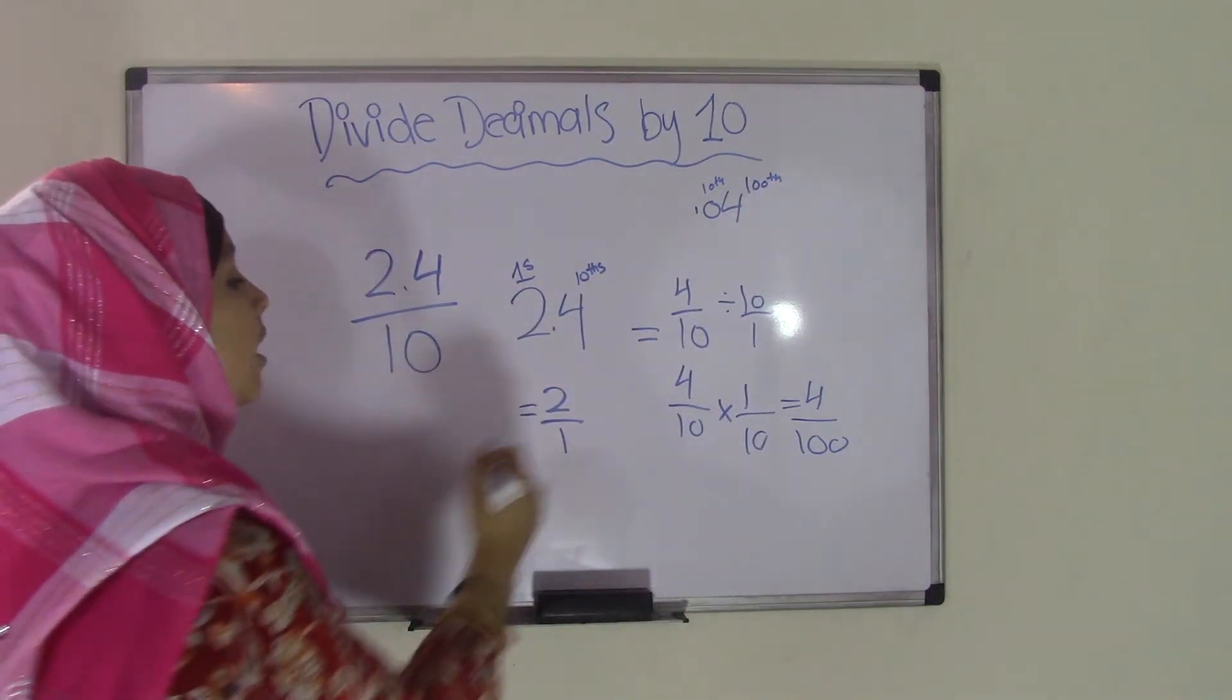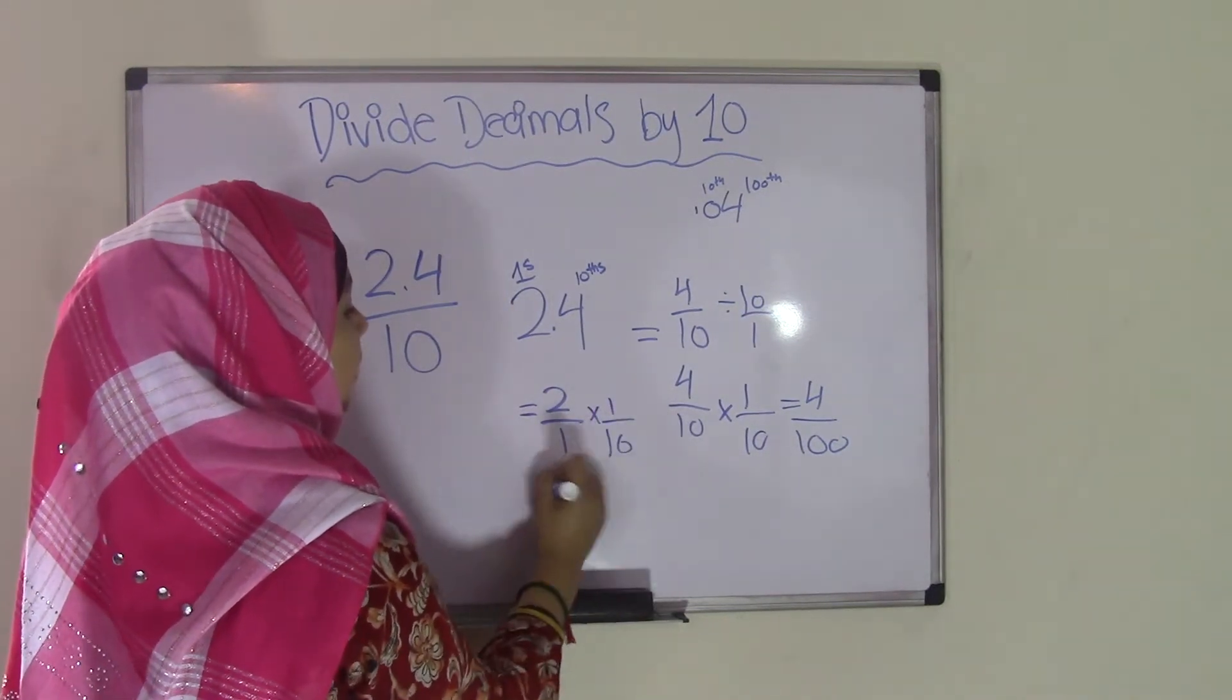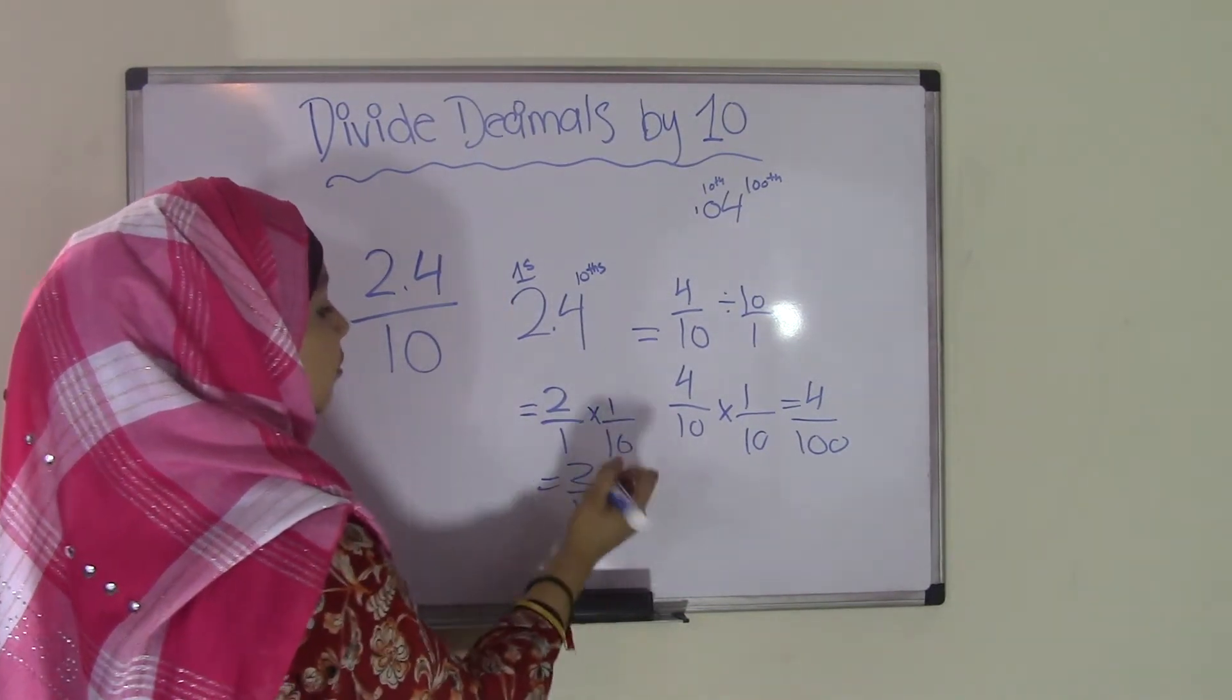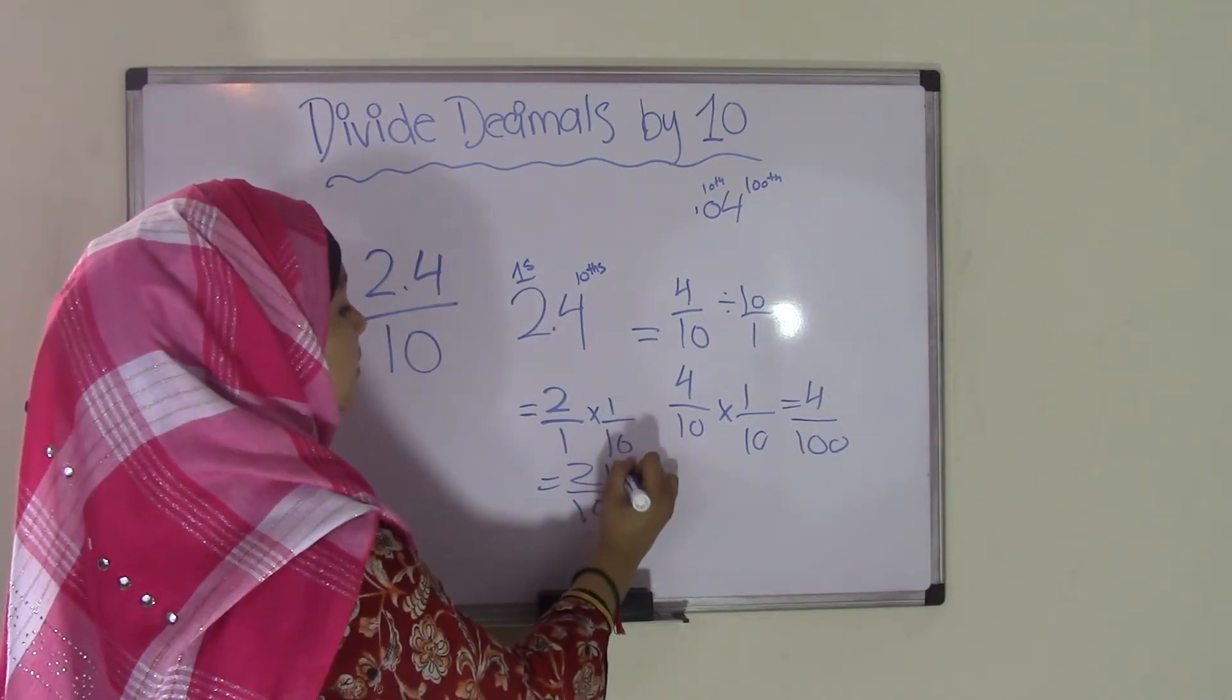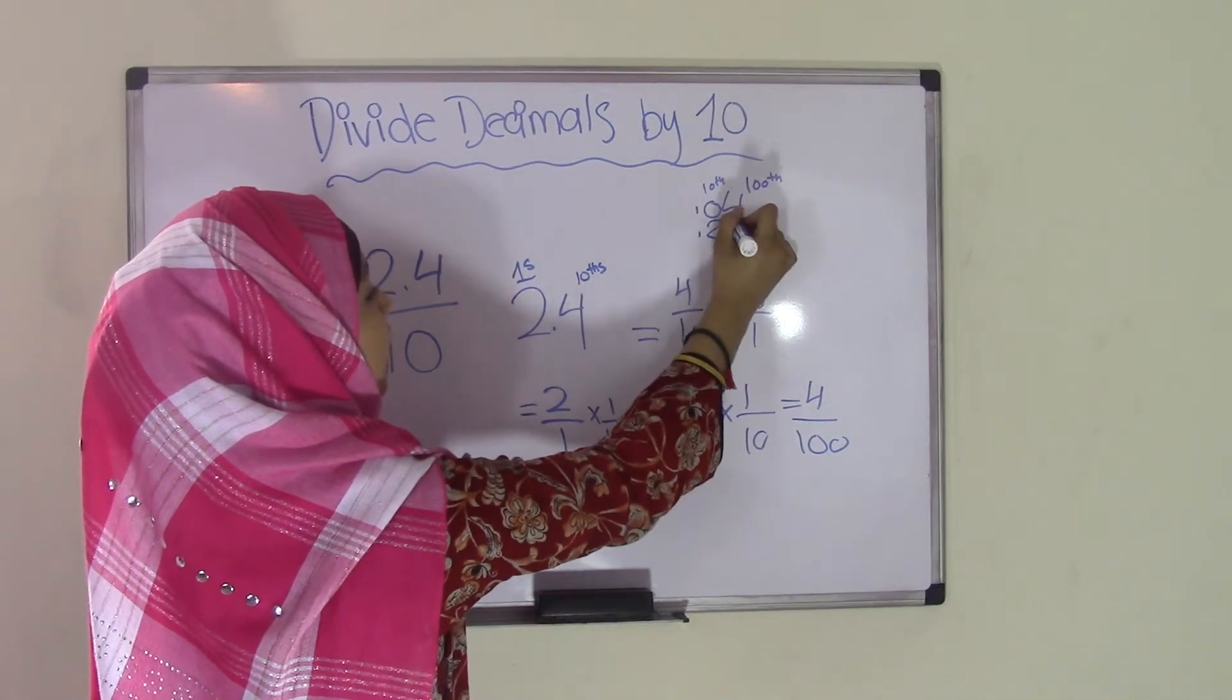Now we go back here to the 2. So 2 over 1 times 1 over 10, it would become 2 over 10. So now the 2 ones will now become 2 tenths. So we come over here, write 0.2, because the 2 is in the tenths place, add a 0.